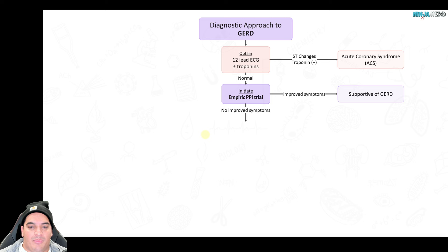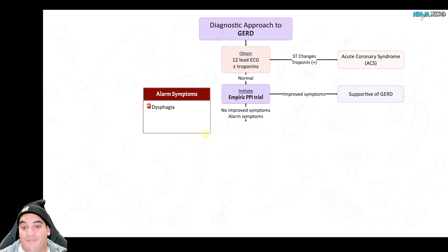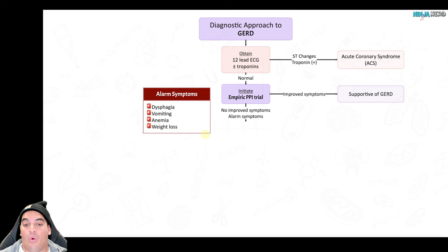If symptoms don't improve significantly with the PPI, you can't completely exclude GERD. Look for alarm symptoms: dysphagia could indicate a stricture; vomiting could indicate a stricture; anemia could indicate a GI bleed or cancer; and weight loss could indicate a stricture or cancer.